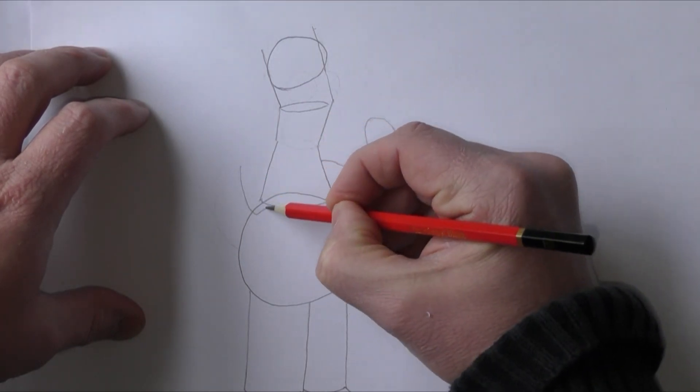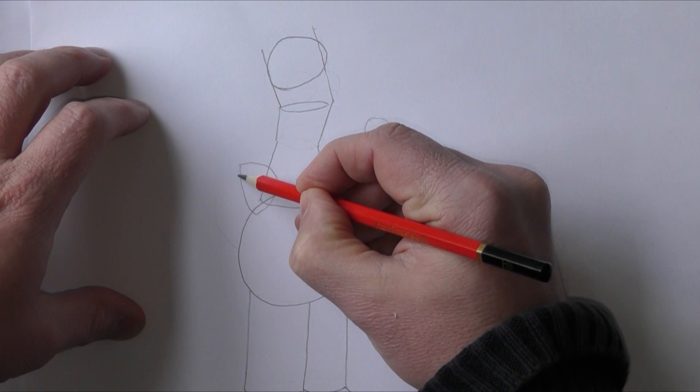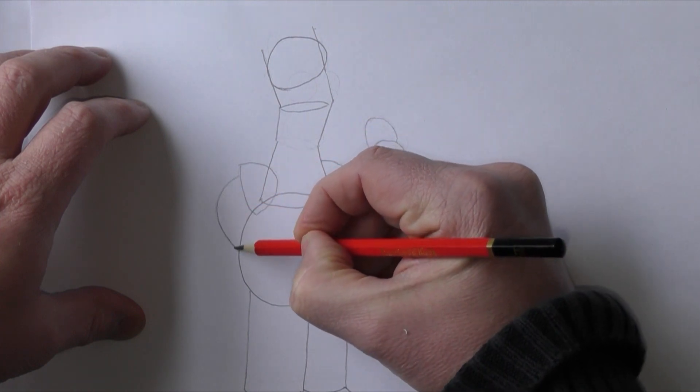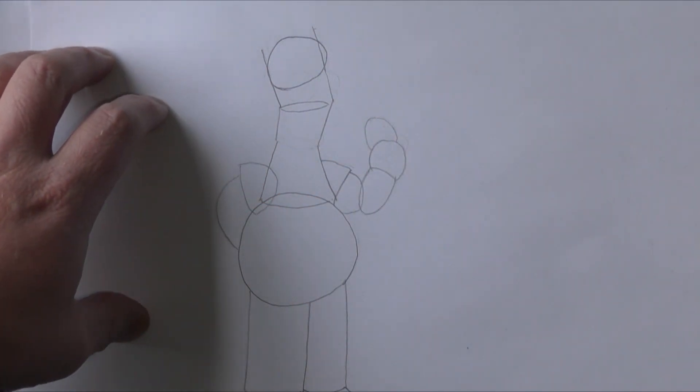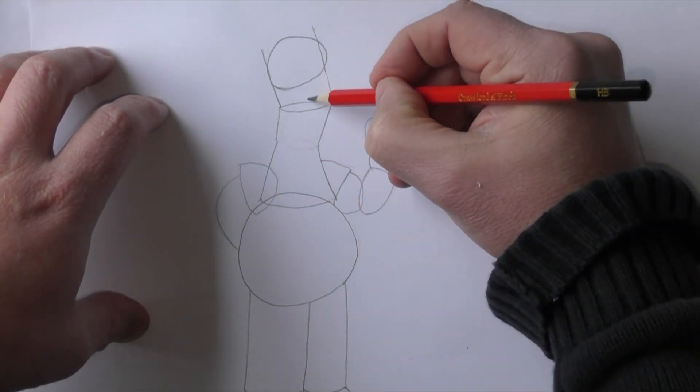Now we need to draw his other arm, so we'll draw the basic starting point of his sleeve and round to his other arm. There we go, so we've got the shell of Homer starting to be formed now.